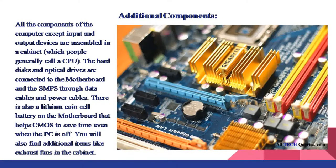All the components of the computer except input and output devices are assembled in a cabinet, which people generally call a CPU. The hard disks and optical drives are connected to the motherboard and the SMPS through data cables and power cables. There is also a lithium coin cell battery on the motherboard that helps CMOS save time even when the PC is off. You will also find additional items like exhaust fans in the cabinet.